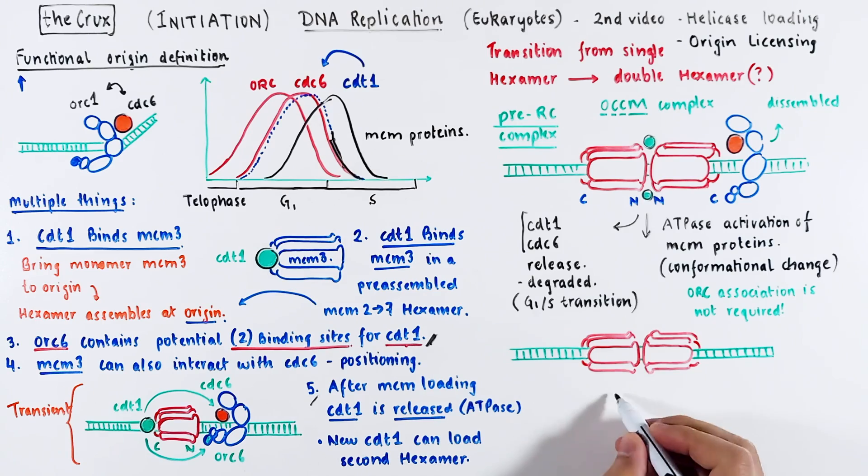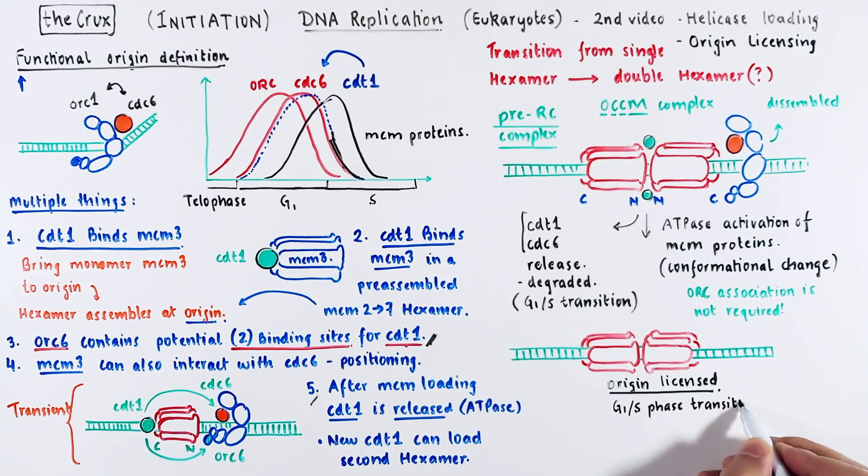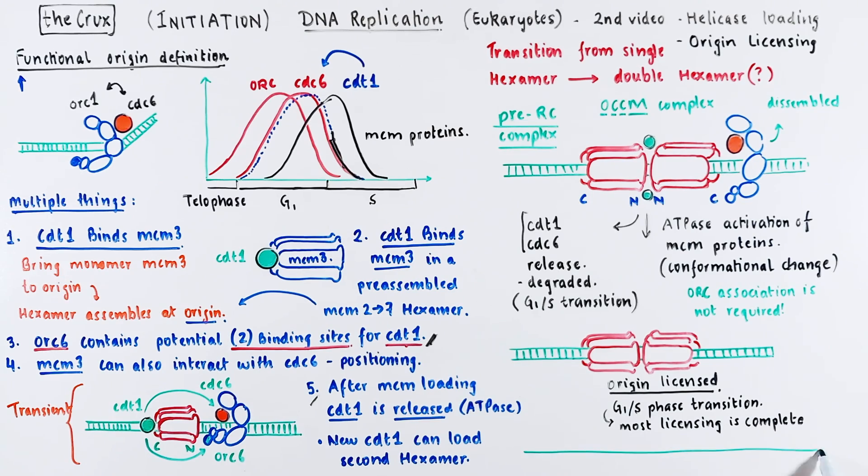This marks the origin licensing, which is happening at the G1S phase transition. And by the time cells are entering the S phase, most origin licensing is already done. So if we look at the genome in early S phase, it will have many double hexamers associated. The numbers range from 40,000 to about 100,000. However, even this double hexamer is inactive. It still cannot unbind DNA. So it needs to move from wrapping the double-stranded DNA to wrapping the single-stranded DNA, and then continue unbinding like a functional helicase. And we will talk about that in origin firing in the next video.